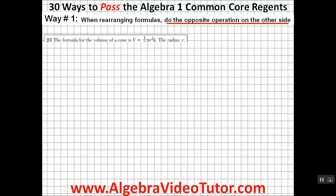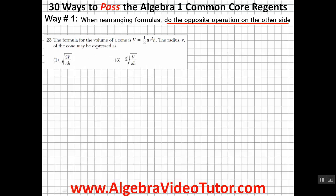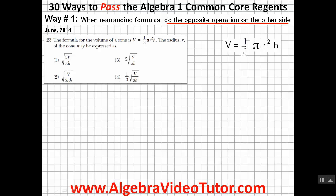Another variation of this question appeared on the June 2014 Algebra I Regents, but this time had one third thrown into the mix. Once again, rearranging for R, do the opposite operations on the other side, including multiplying V by 3 to get rid of the one third. Finally, take the square root of the entire formula to get rid of the square, making the answer choice one.